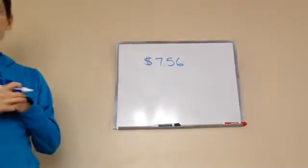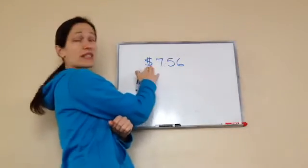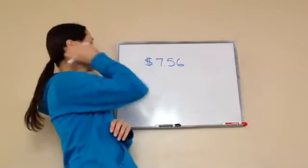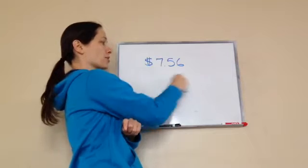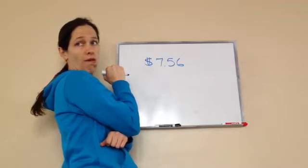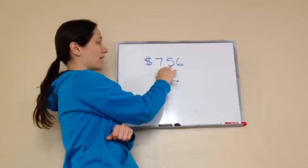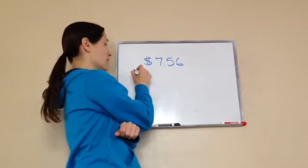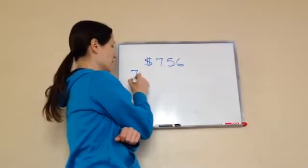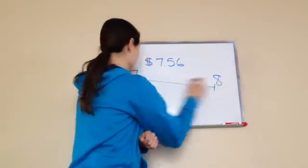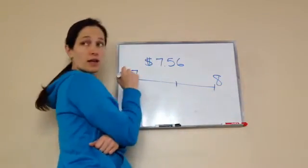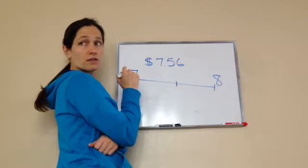Alright, we're going to try to round this to the nearest dollar. So between which two dollars is this amount? It's seven dollars and eight dollars. So it's in between seven and eight, and it'd probably be closer to eight. So it's in between seven and eight — what is halfway? Thirty? Nope.